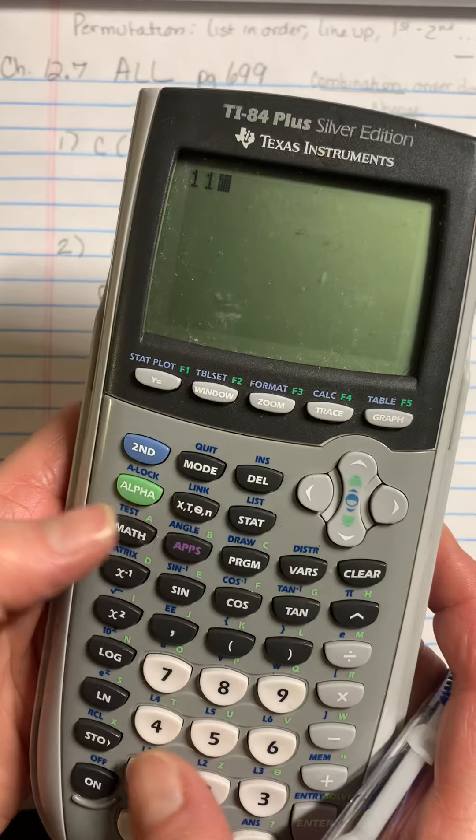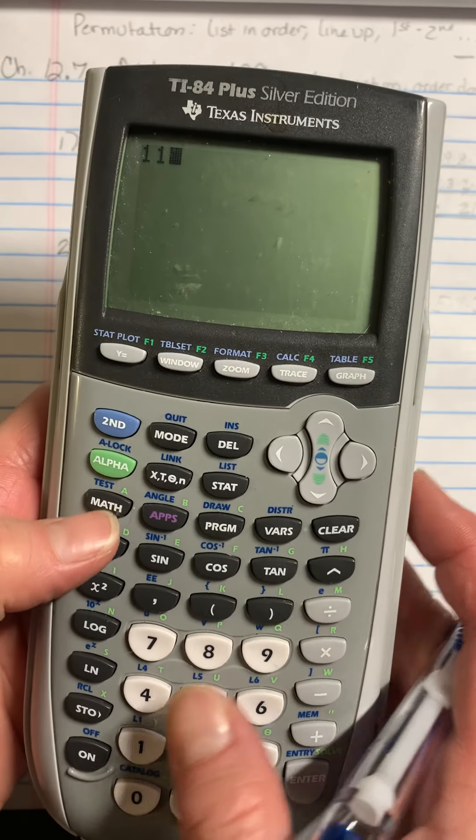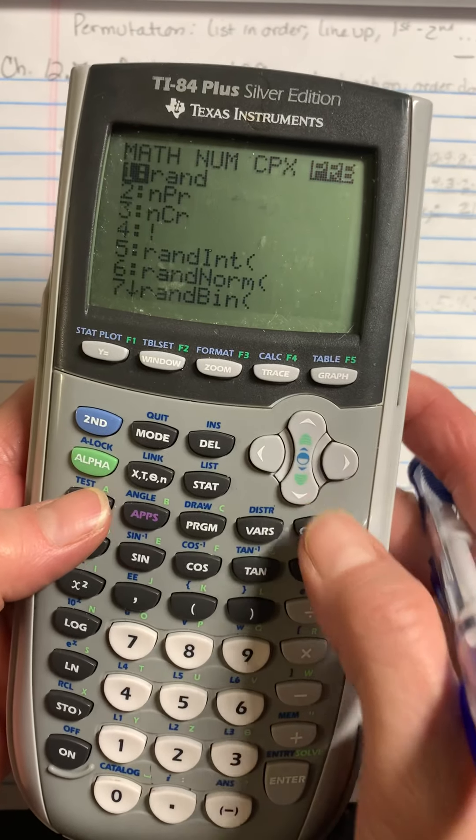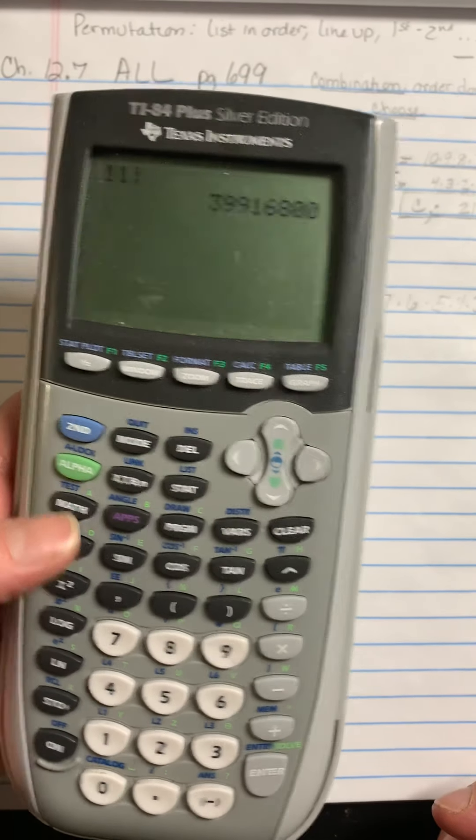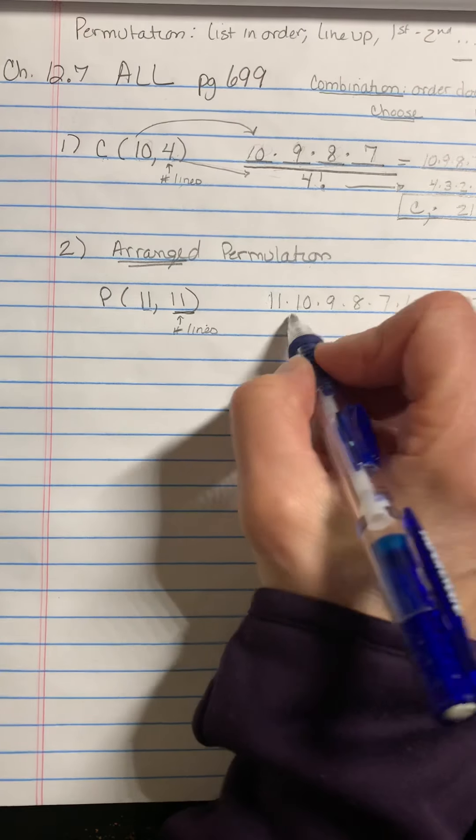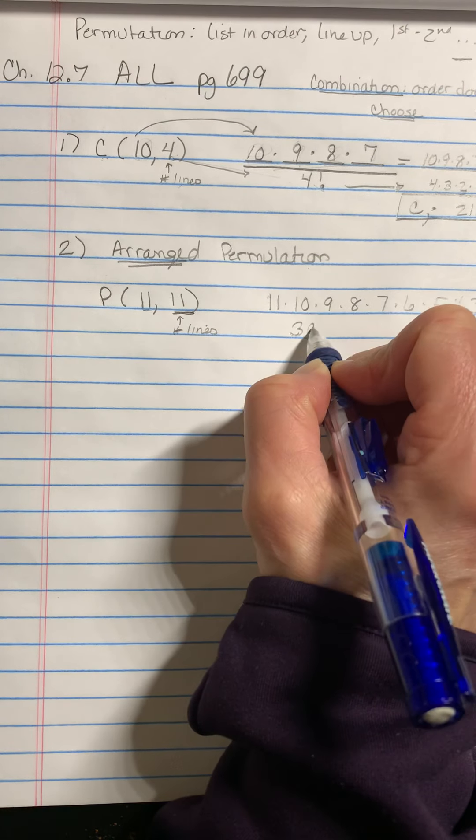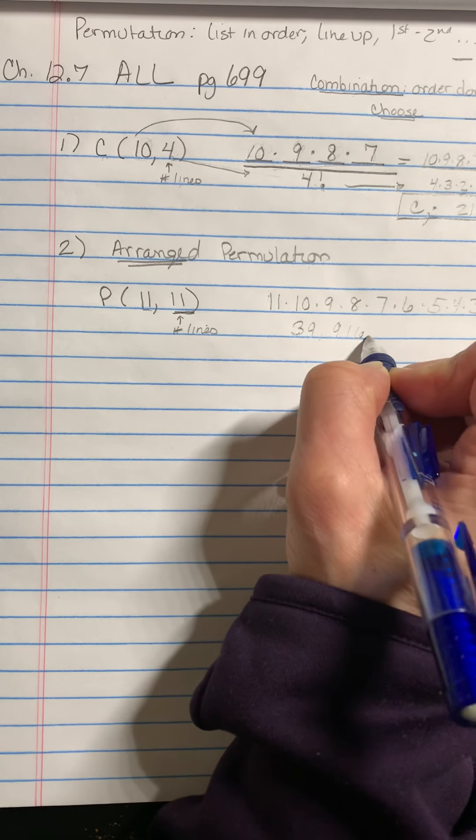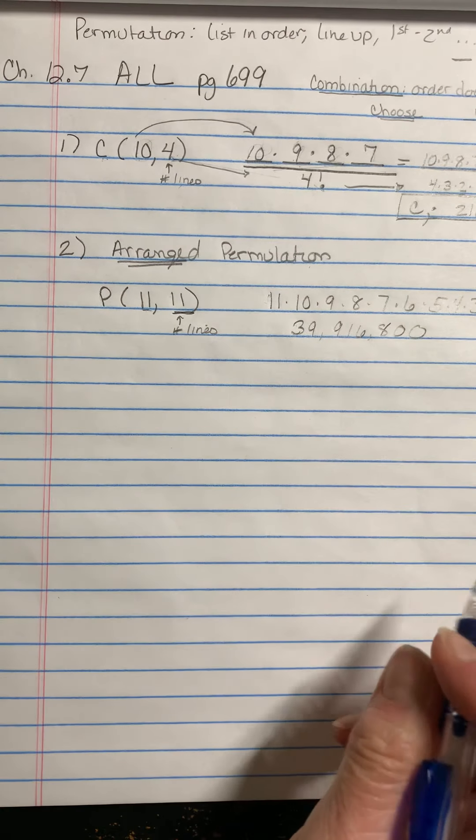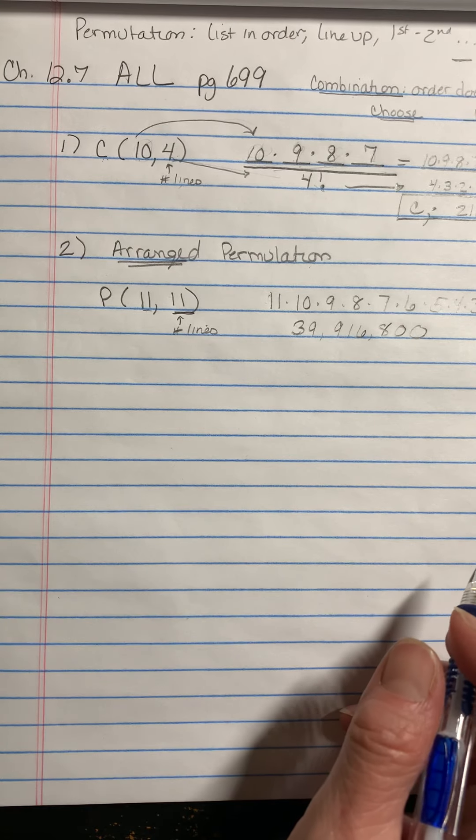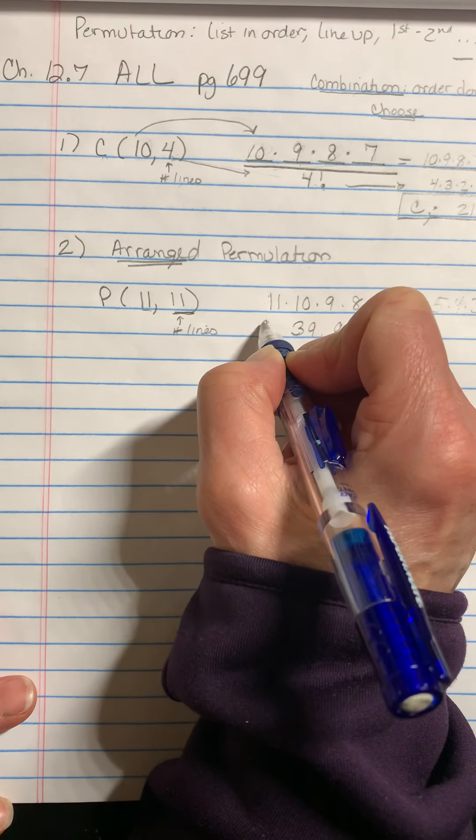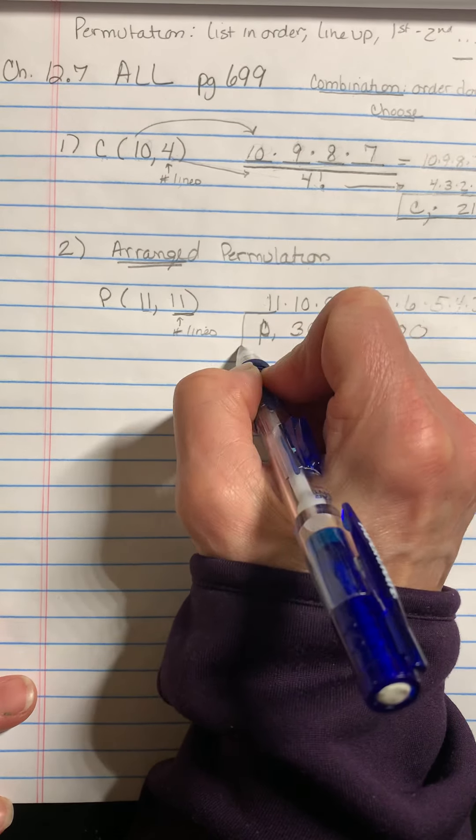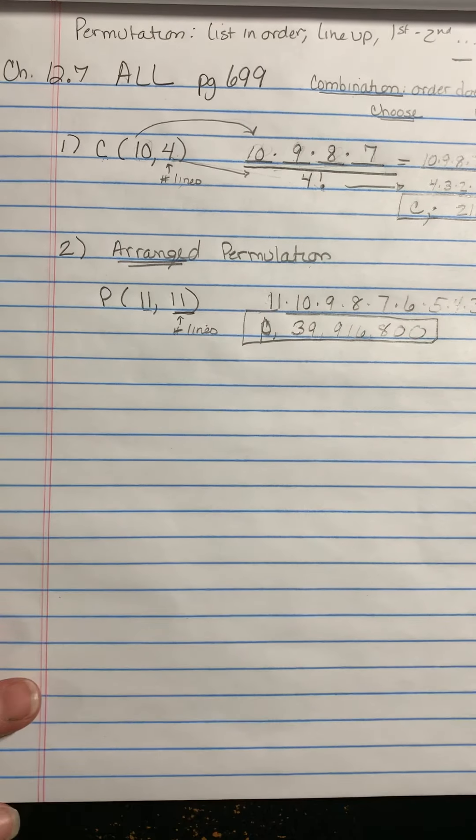So really you're just doing 11 factorial. So you're going to go 11 first in your calculator, math, probability down to number four. You could hit the number four and it would take you right down to that. And there you go. So we have 39,916,800 different ways to arrange 11 photographs. Who'd have known? That's a permutation. So here is your answer.